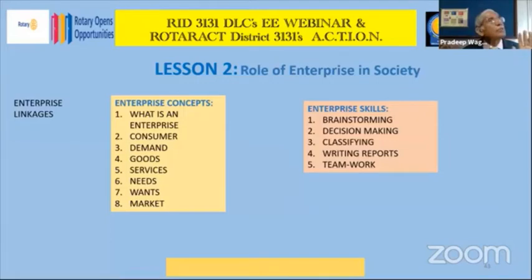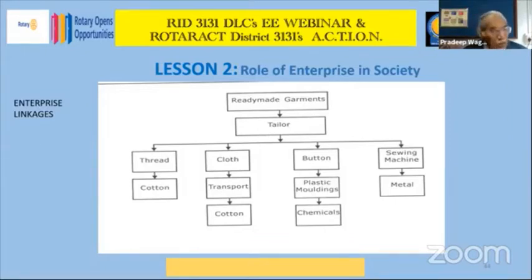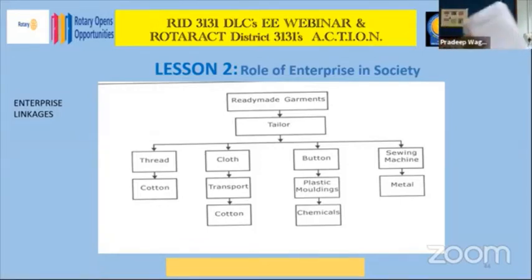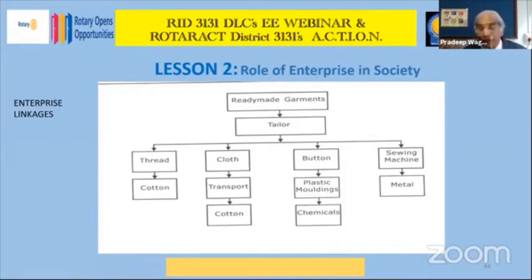There are about 20-25 lessons in total. The next exercise is enterprise linkages, where the linkages of ready-made garments are shown — tailor, thread, cloth, button. In your worksheets, a blank sheet has been provided. Whatever enterprise you choose, please find out its enterprise linkages and fill them in. You can fill it up electronically and send it back. You will understand the total context in which your idea will flower, and sometimes an entrepreneur also takes on related enterprises as he grows.